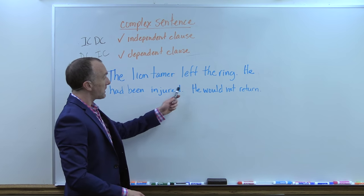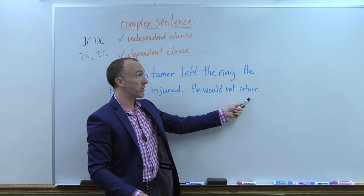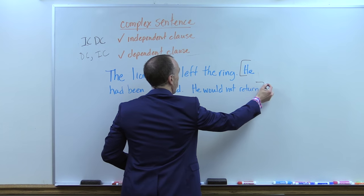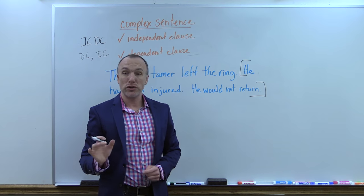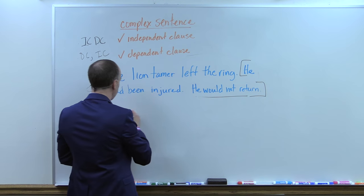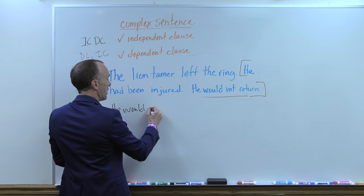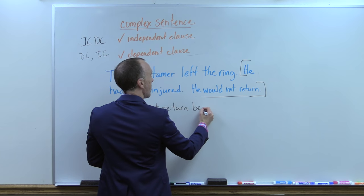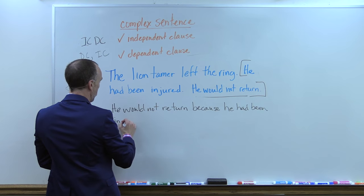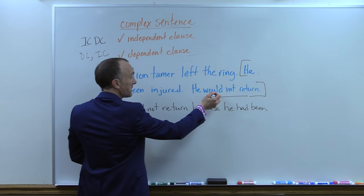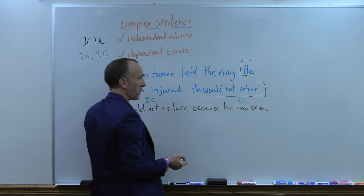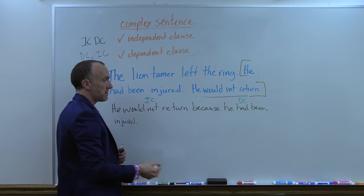So how do we combine sentences using an independent or dependent clause for the complex sentence? Let's look at the example on the board: 'The lion tamer left the ring. He had been injured. He would not return.' Those are all simple sentences, but the last two can be combined into a complex sentence. I'm going to use the subordinator 'because' and say: 'He would not return because he had been injured.' Now we have combined those two sentences in the format of a complex sentence — independent clause followed by dependent clause.